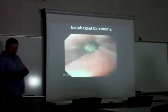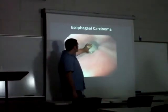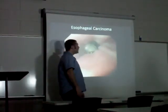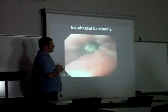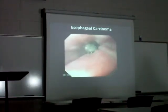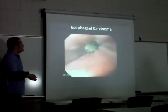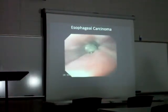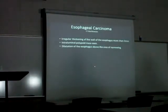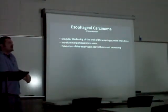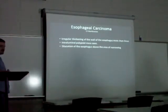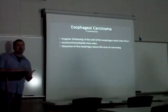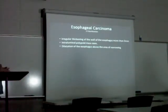Endoscopic studies can directly visualize the tumor. On CT, esophageal carcinoma manifests as irregular thickening of the esophageal wall greater than 3 millimeters, and an intraluminal polypoid mass can be seen — resembling the polyps found during colonoscopy. Dilatation of the esophagus above the area of narrowing is also demonstrated as the proximal esophagus attempts to compensate for the stenosis.